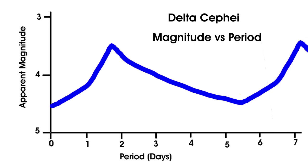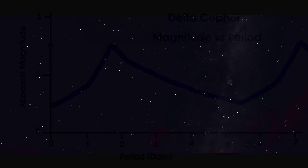You can actually witness the variability of this important star. Delta Cephei has a period of 5.4 days with an apparent magnitude range of 3.5 to 4.5, meaning it is visible to the unaided eye. Here is where you will find Delta Cephei.